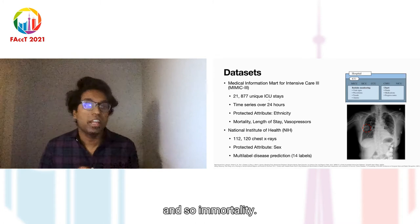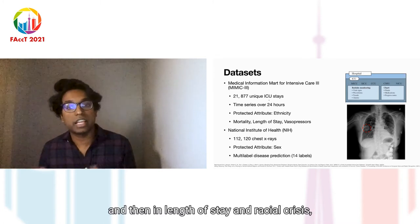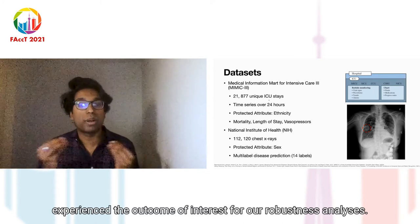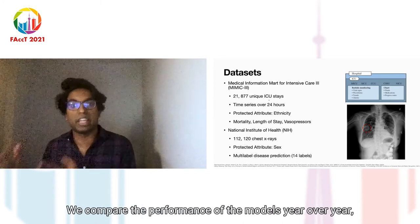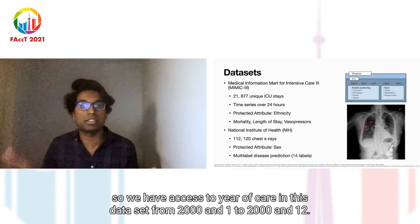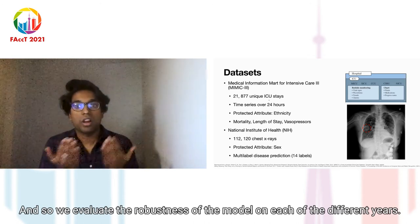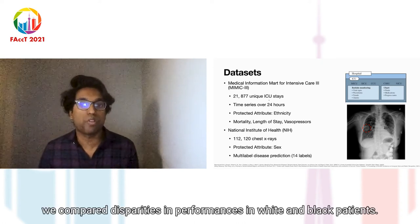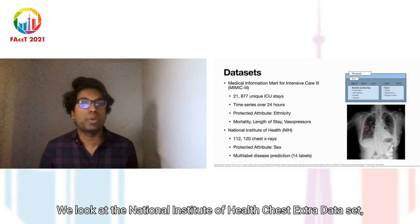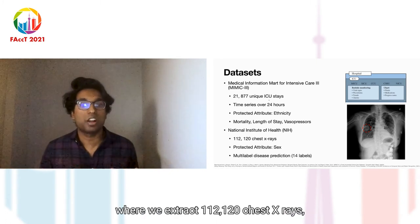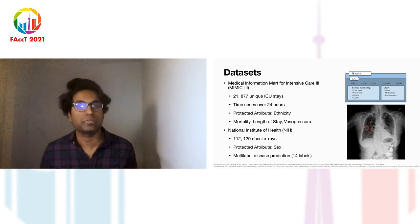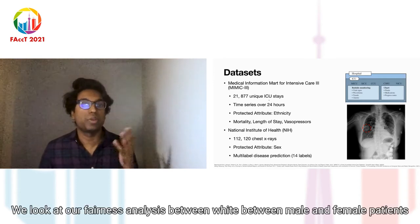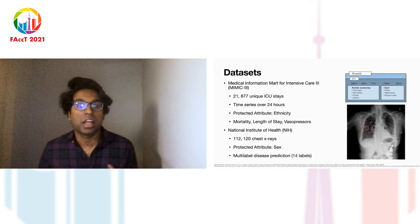For mortality, 7% of patients died. For length of stay and vasopressor, 43% and 40% respectively experienced the outcome of interest. For our robustness analyses, we compare model performance year over year, with access to year of care from 2001 to 2012. For our fairness analyses, we compare disparities in performance between white and black patients. For the chest X-ray dataset, we look at the National Institutes of Health chest X-ray dataset, extracting 112,120 chest X-rays, focusing on accuracy and fairness analyses between male and female patients based on prior work.